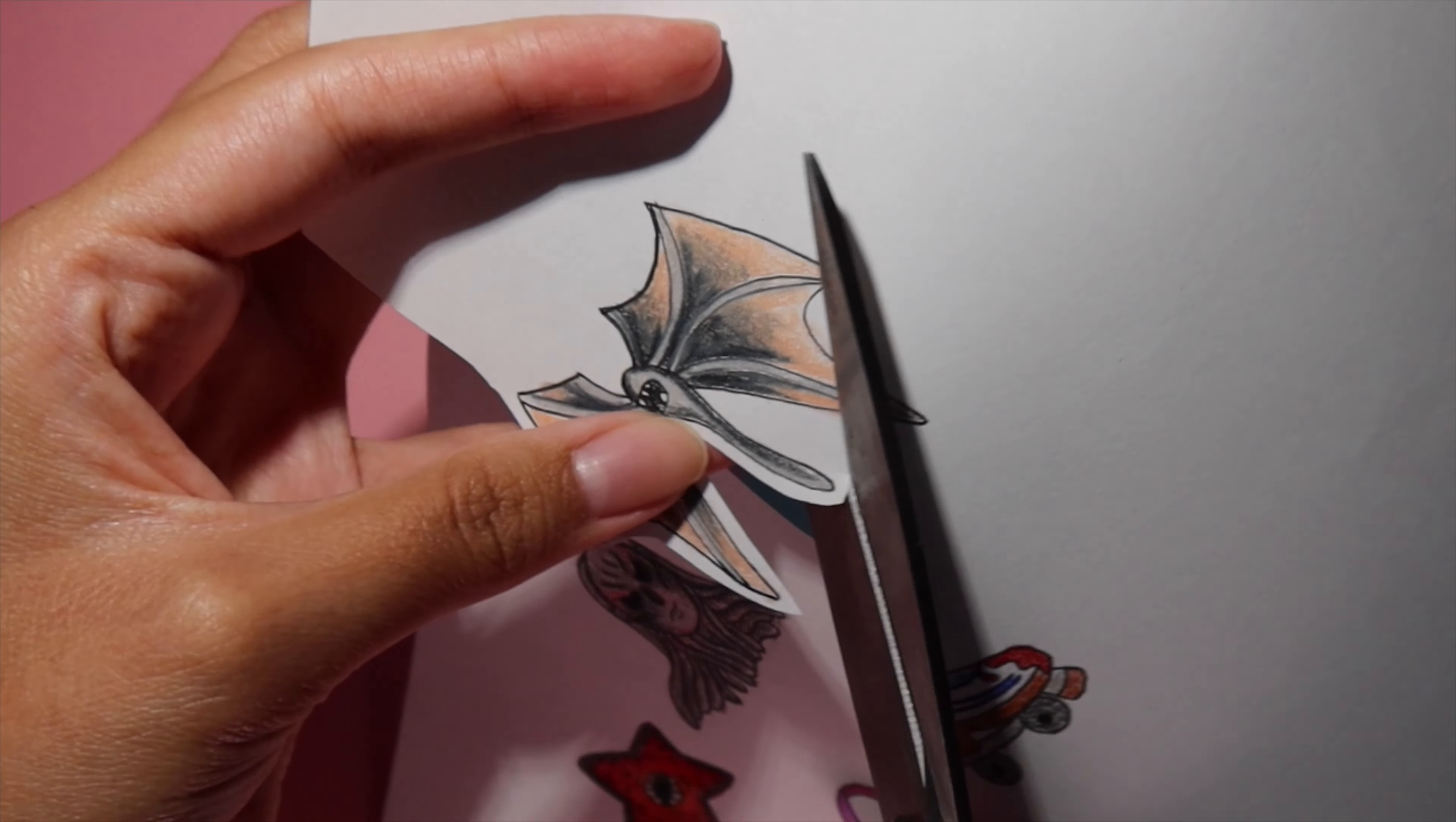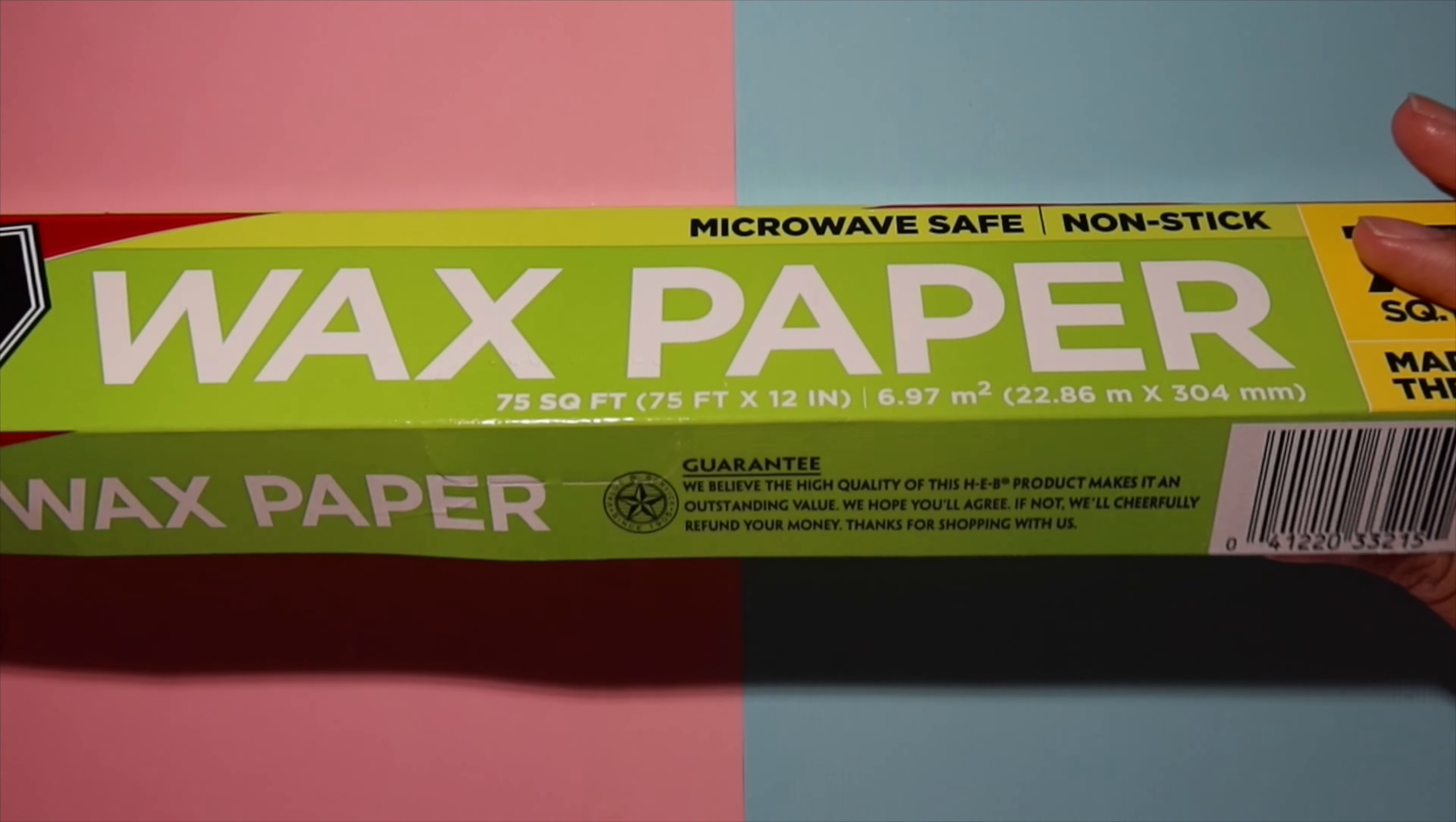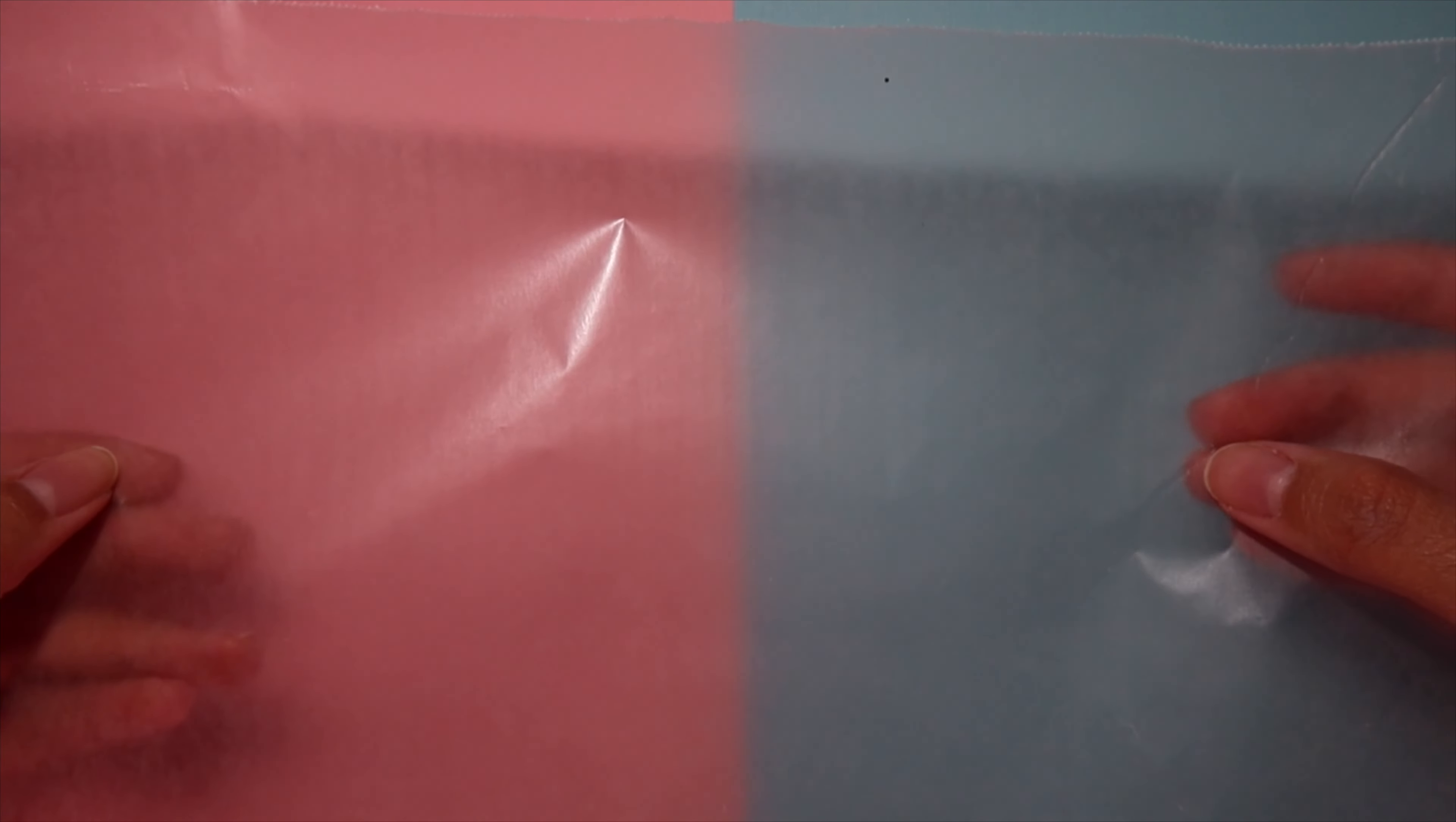Once you're done coloring, you're just going to cut these out. You can leave a white border around them like I am or just cut them out how they are. I'm going to be using some wax paper. It looks like this. It's just really glossy and waxy paper that the stickers can easily peel off of. I'm also going to be using some packaging tape.